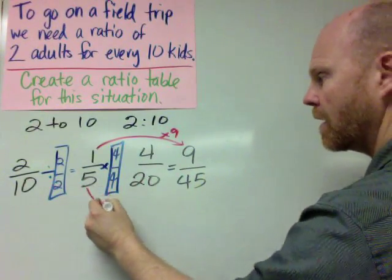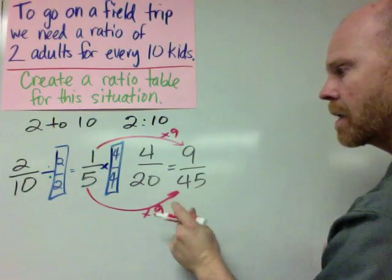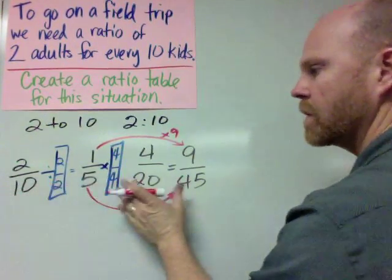So 1 times 9 gives us 9, and 5 times 9 gives us 45. So we see that all of these ratios belong.